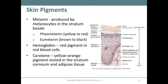Adipose tissue always appears yellow because of carotene. Blood is red because of hemoglobin in the red blood cells. If you look around a room you would see people of all different shades and colors — that is a result of melanocytes and melanin.